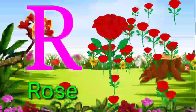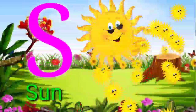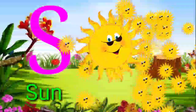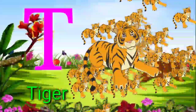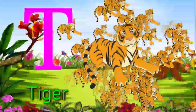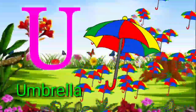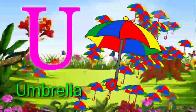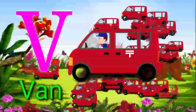R for rose, S for sun, T for tiger, U for umbrella, V for whale.